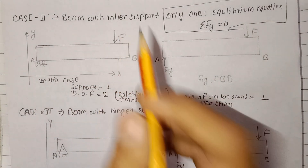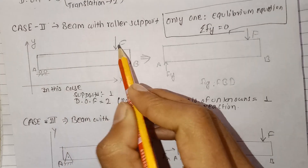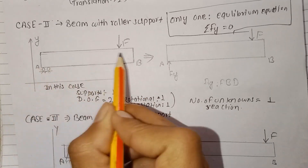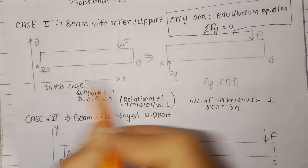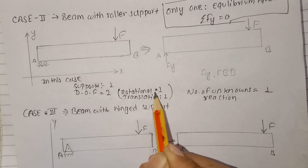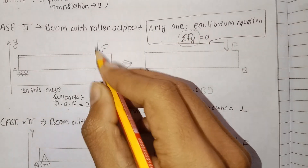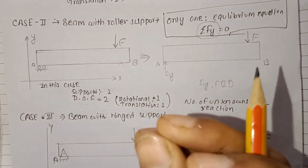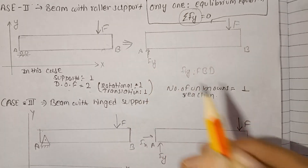Now consider a beam with a roller support. This is the free body diagram with a roller support. The roller support constrains movement in the y-axis direction. The body can still move along the x-axis and rotate about the z-axis — these are remaining degrees of freedom. The translational degree of freedom in y is constrained, and a rotational degree of freedom remains.